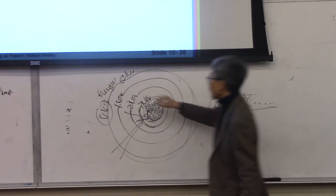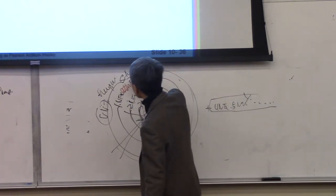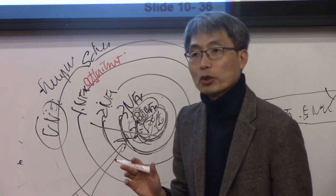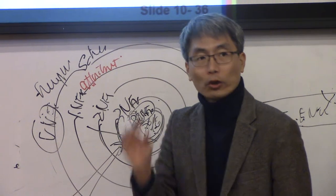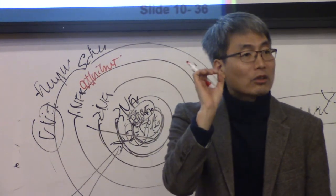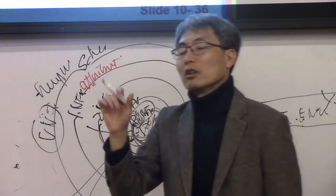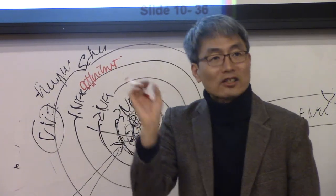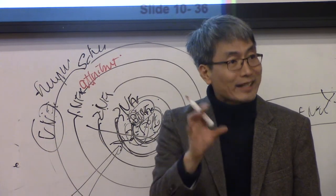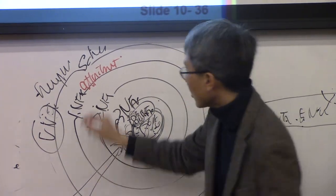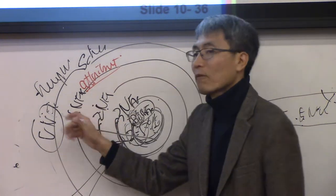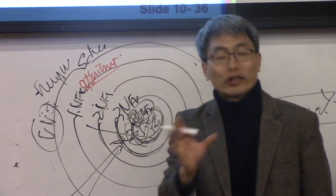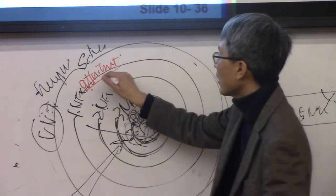First normal form is about attributes. Do you remember that in the relational model, attributes should be atomic? It doesn't allow multivalued, composite, or nested attributes — only single values. You can check the first normal form: single attribute, no redundant for the attribute. That is the first normal form.